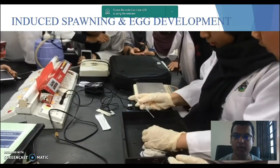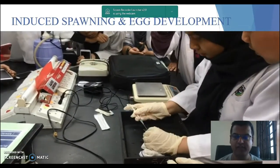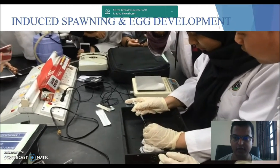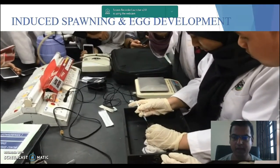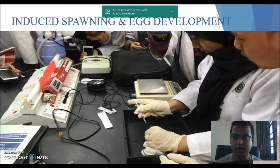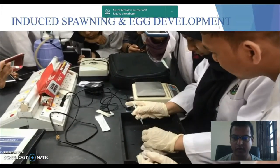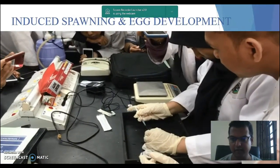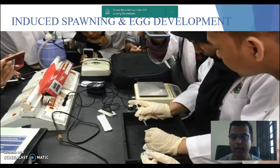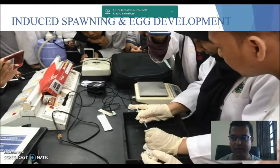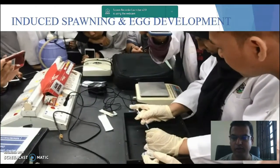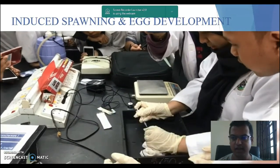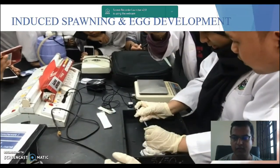In this video, we see the process involved in inducing spawning in freshwater fish. The hormone Ovaprim is injected to induce spawning. Once spawning has taken place, the fertilized eggs are then collected into both a treatment and control beaker for analysis under diffusion slides in a microscope.